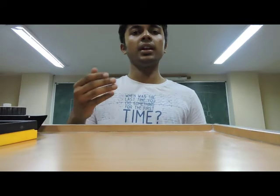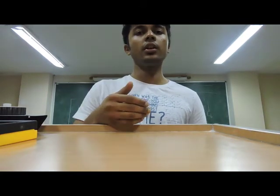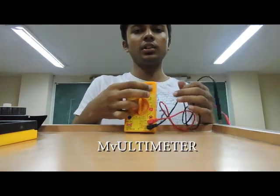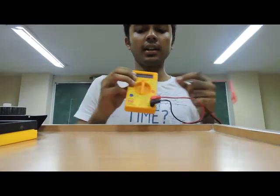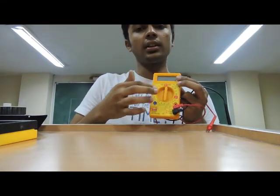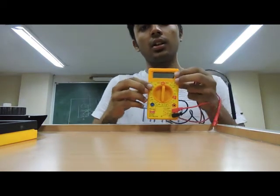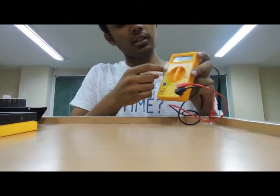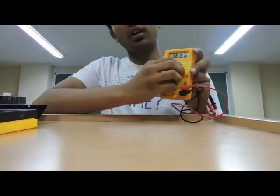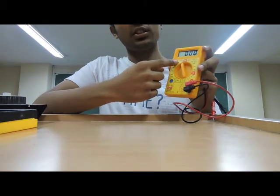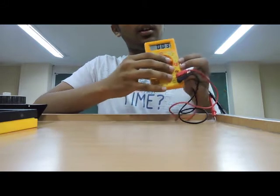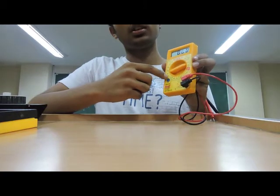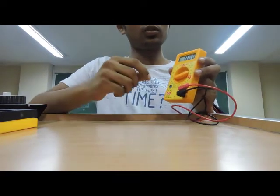Now the first and very important tool will be a multimeter. This is a multimeter — there is a display and a knob with various parameters and functions. The upper right part is used for measuring voltage, the left part is for measuring current, and there are other functions also. The first thing I would like to demonstrate is the short circuit function — a diode and a sound icon indicate this mode.